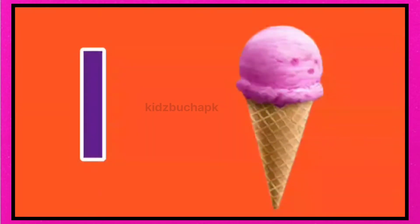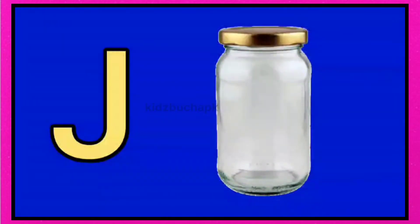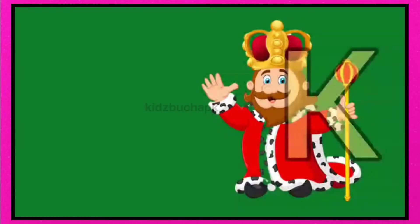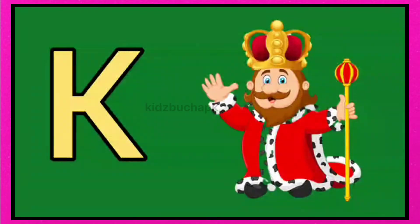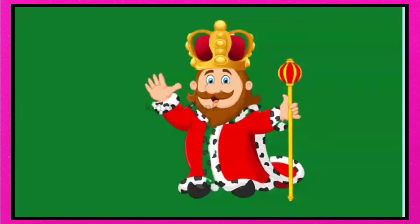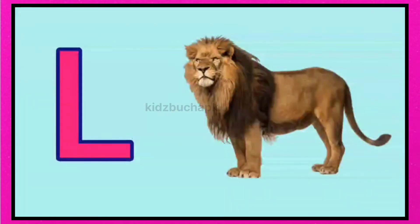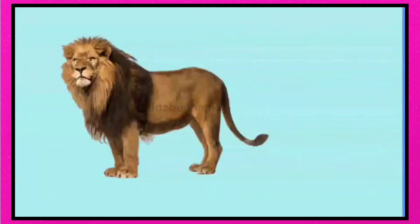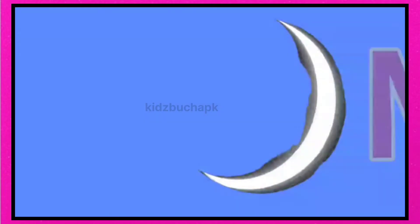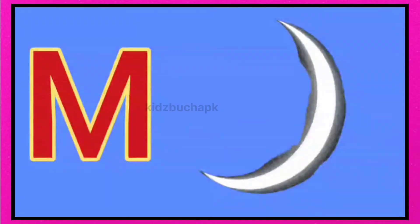I for ice cream, ice cream means ice cream. J for jar, jar means jar. K for king, king means badshah. L for lion, lion means share. M for moon, moon means chand.